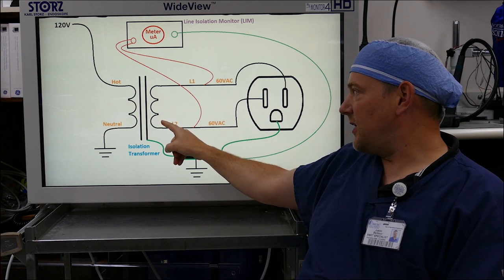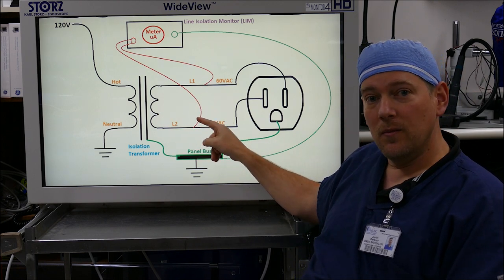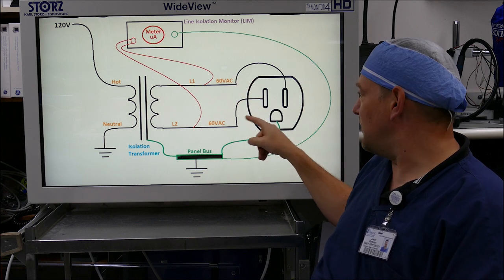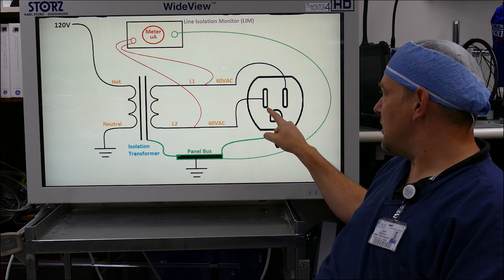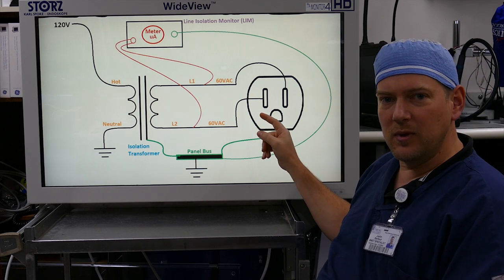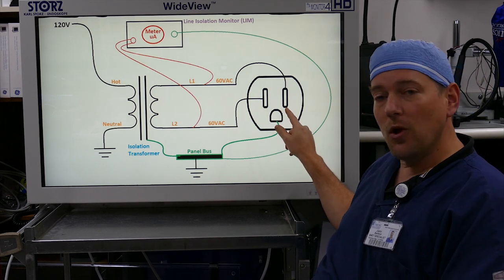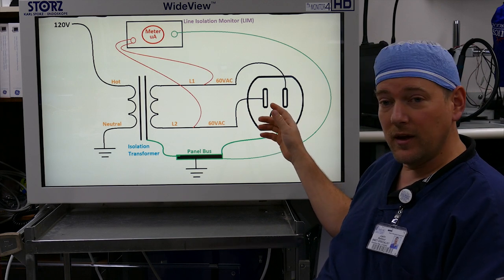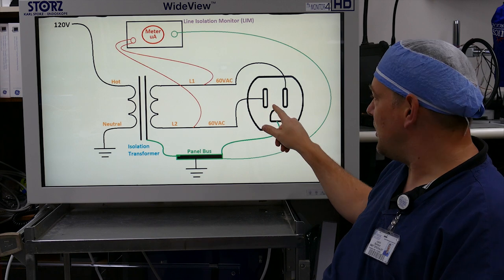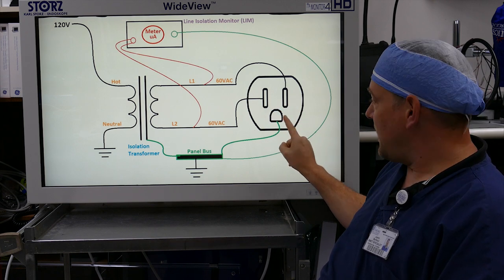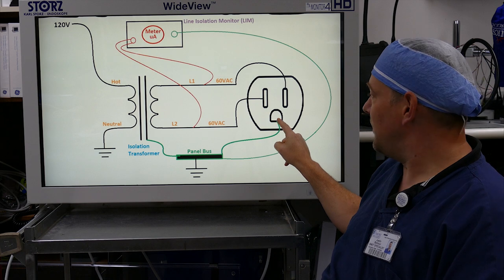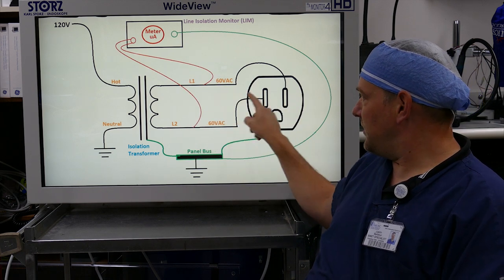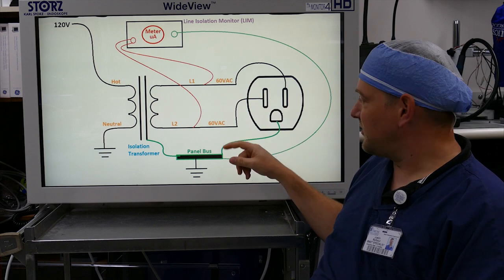Over here on the secondaries you'll have L1 and L2. Both of the secondaries will be at 60 volts potential. So normally in an electrical outlet you have a large opening which would be your neutral, a small opening which would be your hot, and then you have your ground. While in operating room electrical you have 60 volts, 60 volts, and you have ground. Ground, if you can see here, has nothing to do with the other two. It's completely separate.